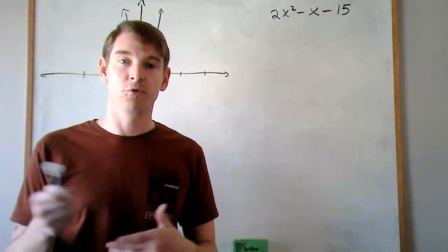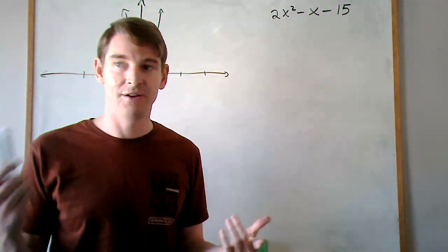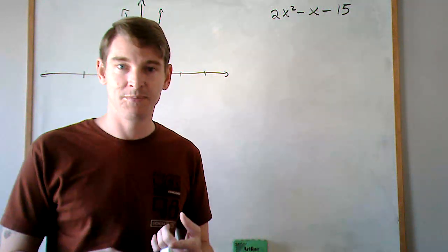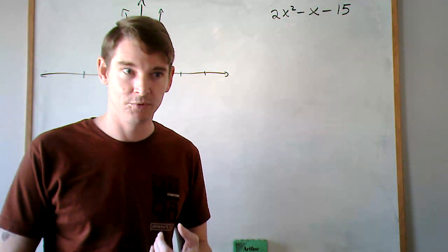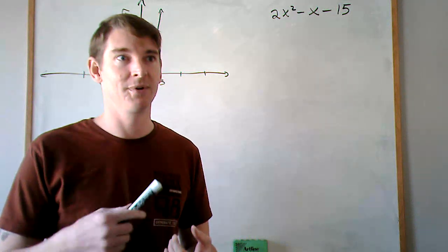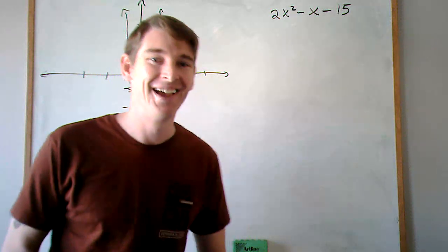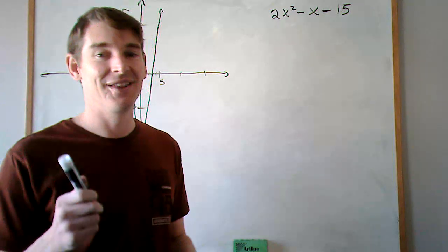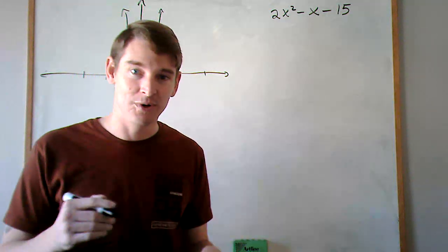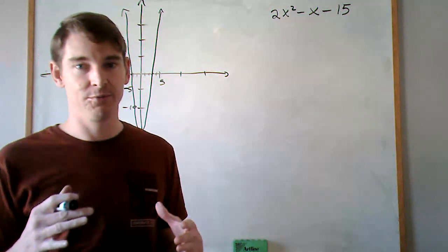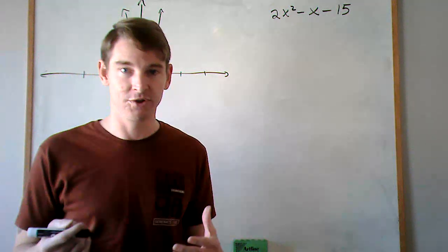So if you recall the quadratic formula, we have x equals the opposite of b plus or minus the square root of b squared minus 4ac, all over 2a. And that quadratic equation is used to find the zeros of the function.